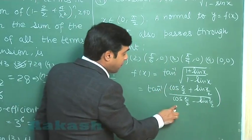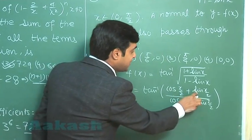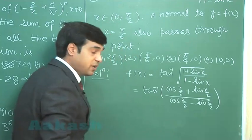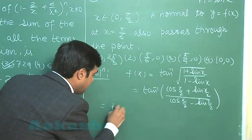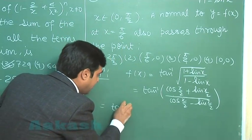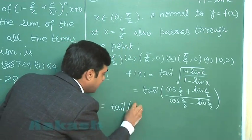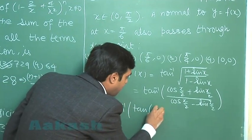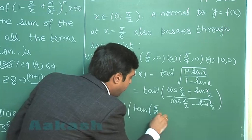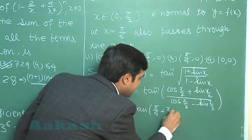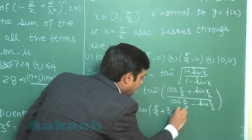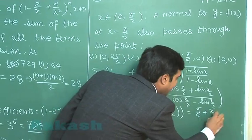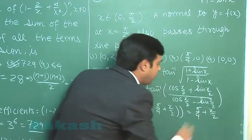Dividing numerator and denominator by cos(x/2), we get (1 + tan(x/2))/(1 - tan(x/2)), which equals tan inverse of tan(π/4 + x/2), or simply π/4 + x/2 for the given interval.